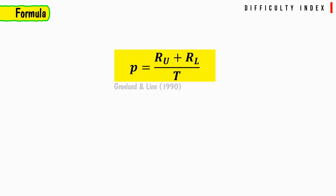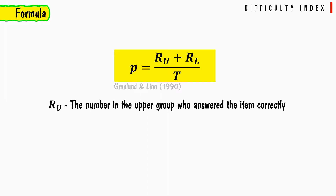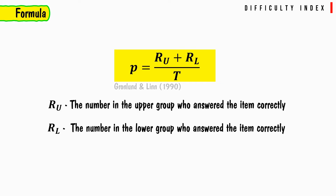The formula for the difficulty index is: p = (RU + RL) / T, where RU is the number in the upper group who answered the item correctly, RL is the number in the lower group who answered the item correctly, and T is the total number who tried the item.